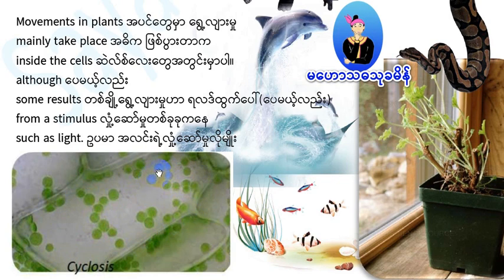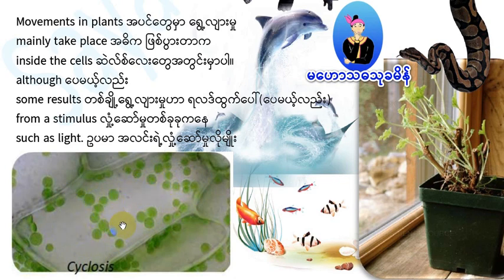If you have chlorophyll, it is an acid. If you have a cell, you can use a cell. This is a cytoplasm. If you have a cell, you can use a cell or you can use a cell. This is a cytoplasm.